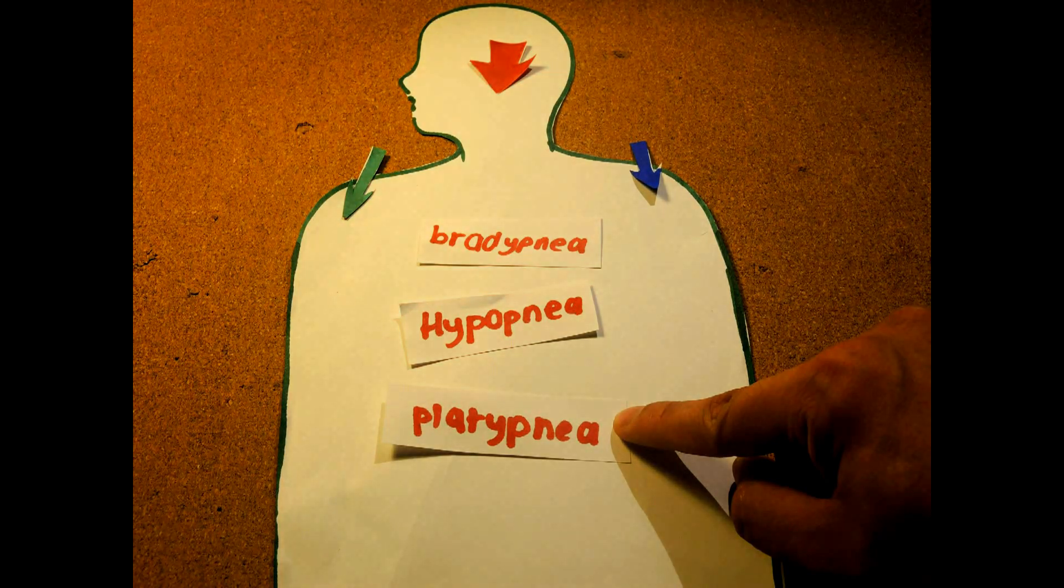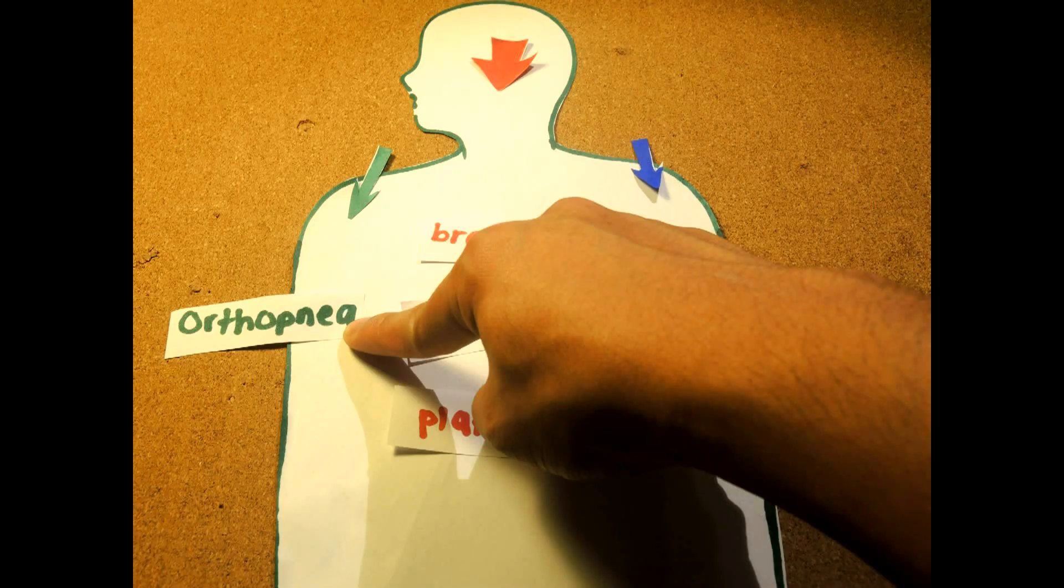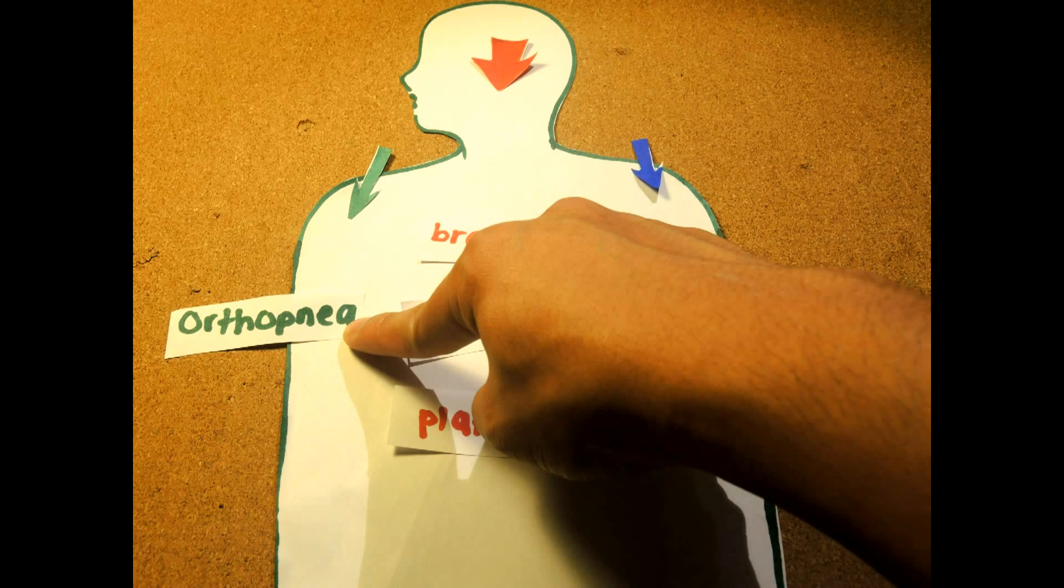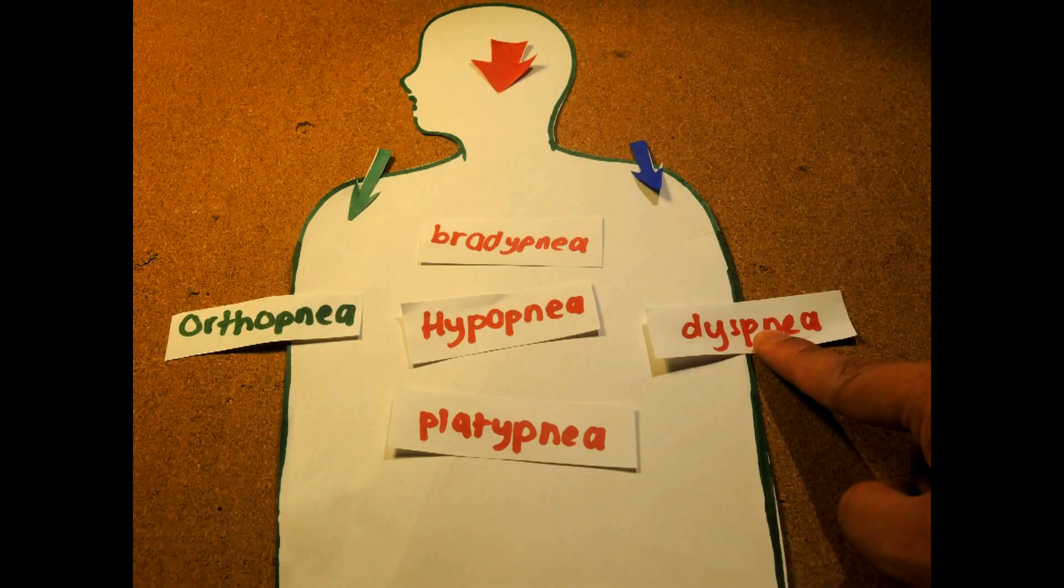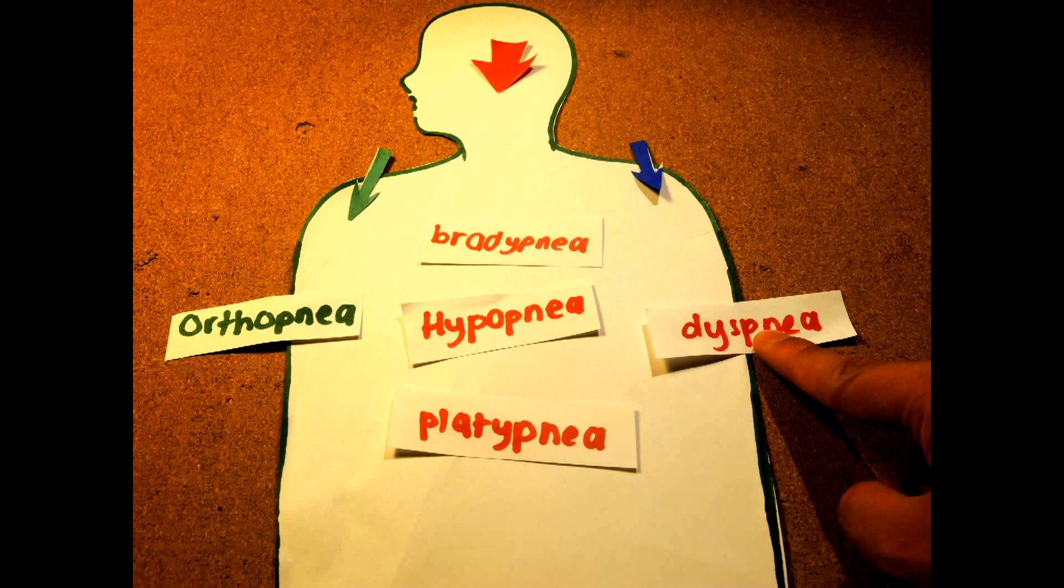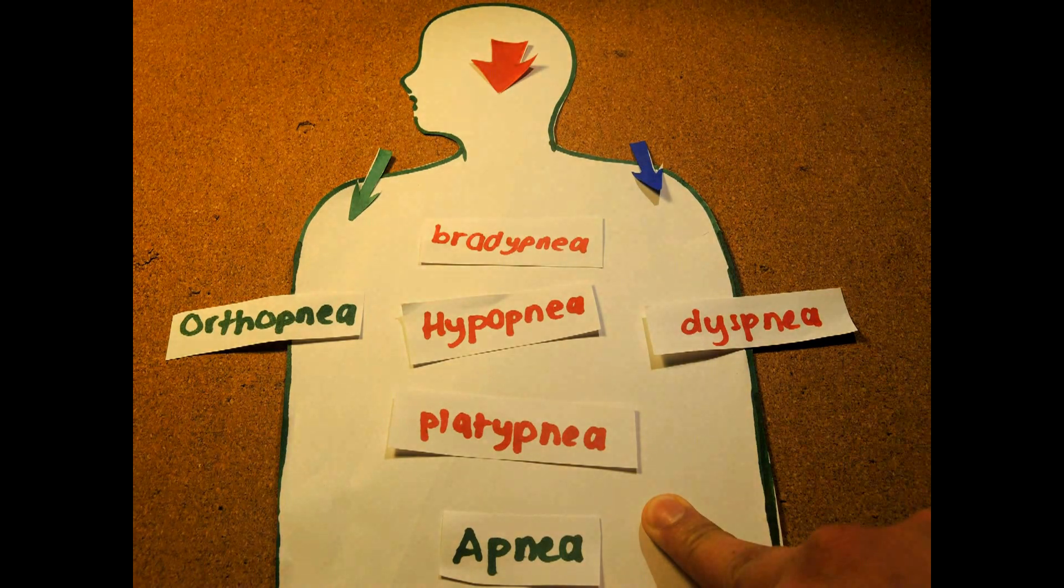Orthopnea, which is the opposite of platypnea, where shortness of breath occurs when lying down and relieves when standing up. We have dyspnea, which is shortness of breath, also known as air hunger, that occurs during heavy exertion and is mainly pathological. And last but not least, we have apnea, which is a total absence of breathing.